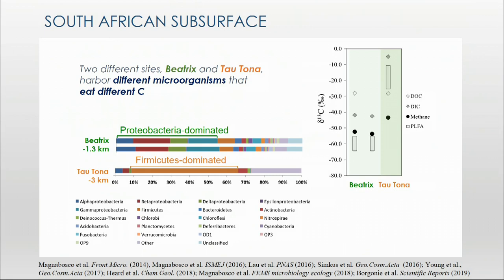Why might this occur? We can see that the microbes are actually eating different sources of carbon, and the carbon available in the environment is really driving the species patterns we see. This is exhibited by looking at the delta 13C value of various types of carbon — the DOC, DIC, and methane — as well as the 13C composition of microbial lipids. At Beatrix, you have microbes eating methane, and the PLFA sitting below the DIC is indicative of more autotrophic communities, where these Firmicutes are really doing autotrophic processes, eating the DIC.